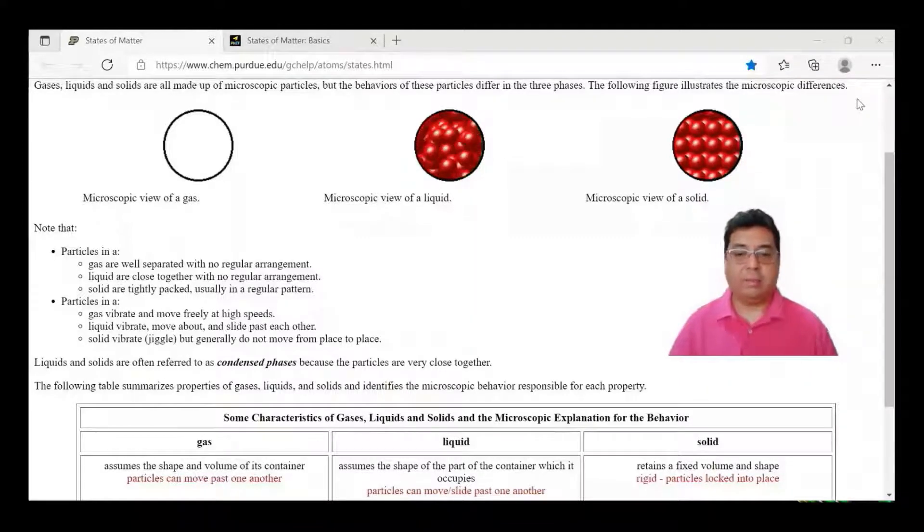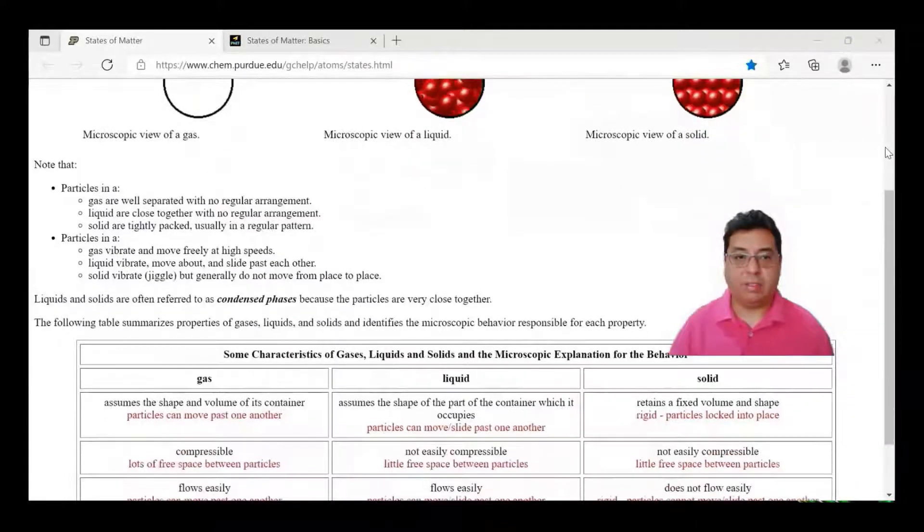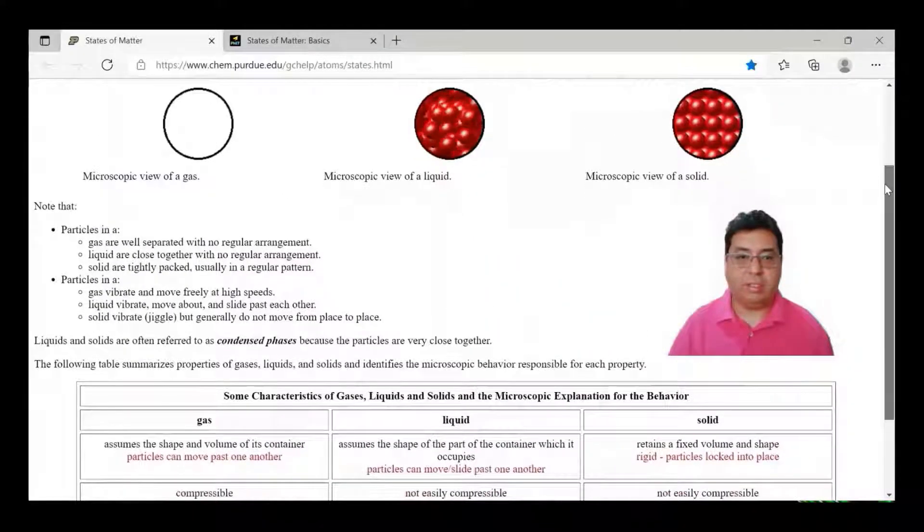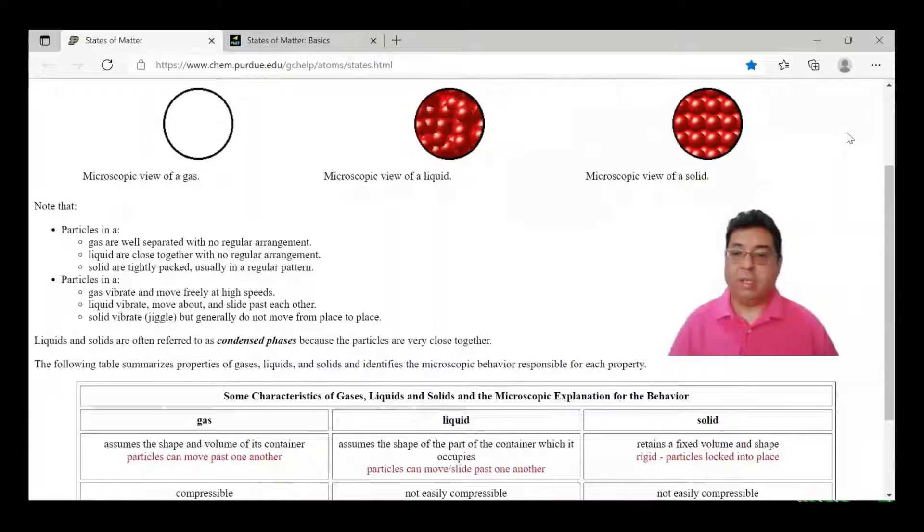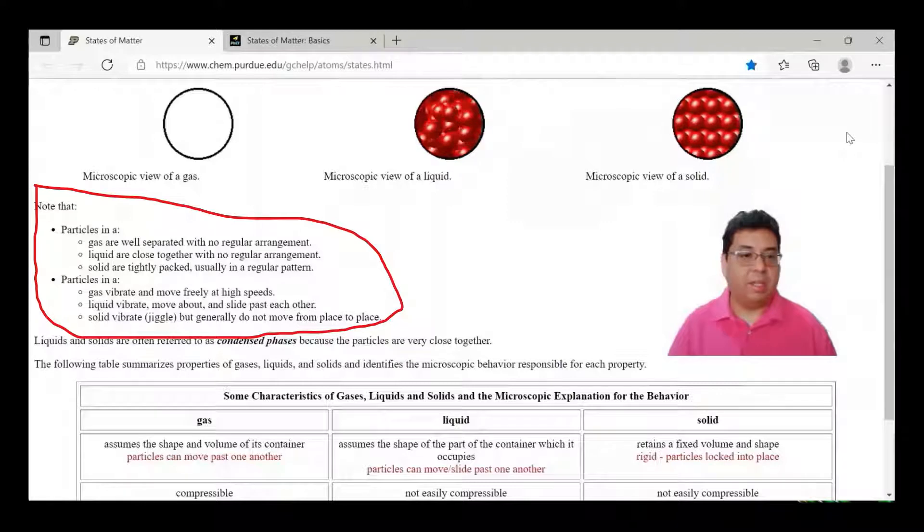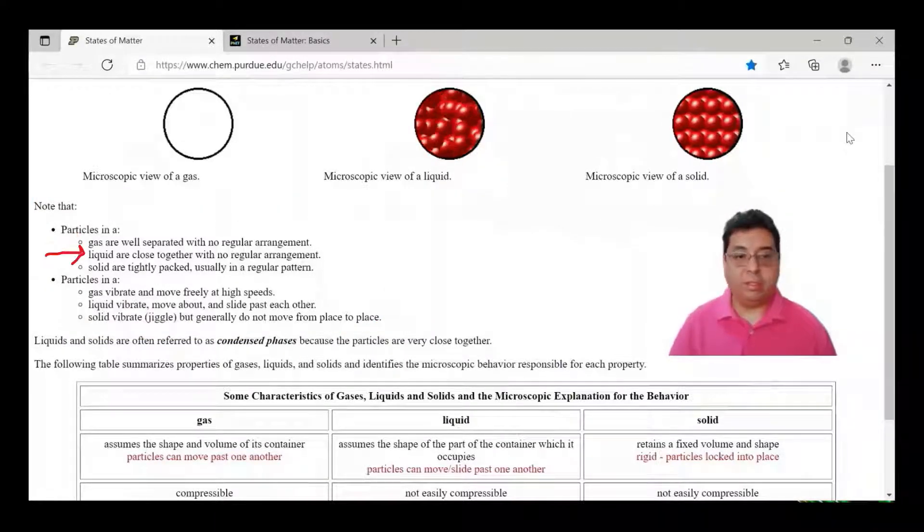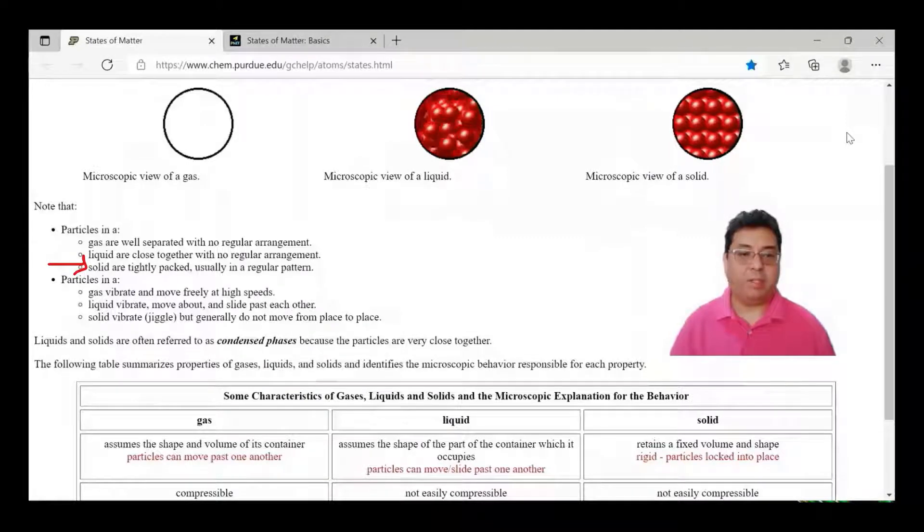I like this site because it gives you a really good overview about what solid, liquids, and gases are here. I'm just going to scroll down just a little bit to show how it categorizes gas, liquid, and solid here. On this side you can see it talks about how gas is separated with no regular arrangement, how liquids are close together with no regular arrangement, and how a solid is tightly packed, usually in a regular pattern.